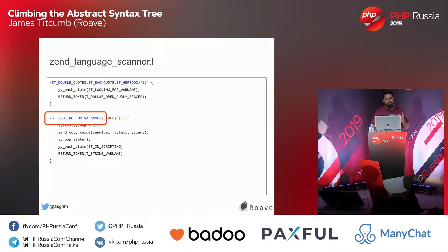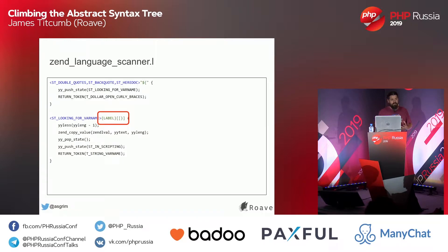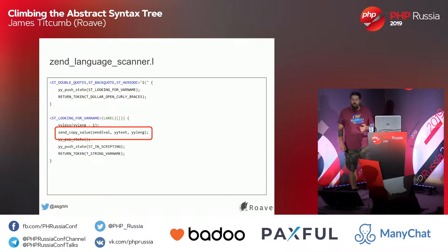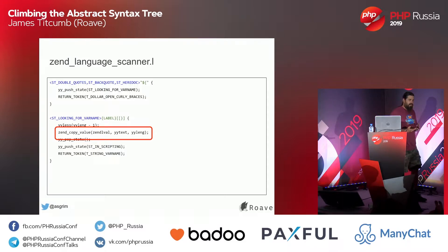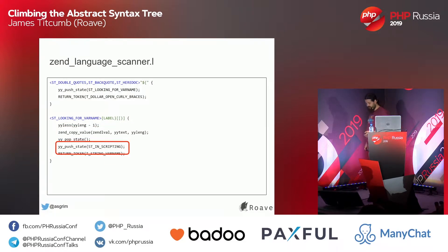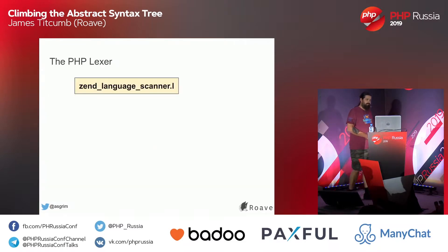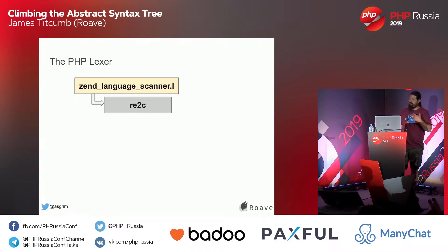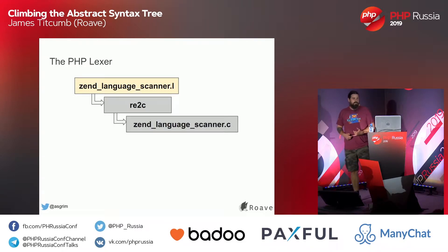The second part is the closing part. We're going to be in the 'looking for a variable name' state. We look for a label, which is basically a shorthand definition, followed by a curly brace. What we do now is copy the semantic value into the token stream and give that token some actual context — in this case, it's the name of the variable we're putting into the string. Then we change the state back to scripting and return the token.